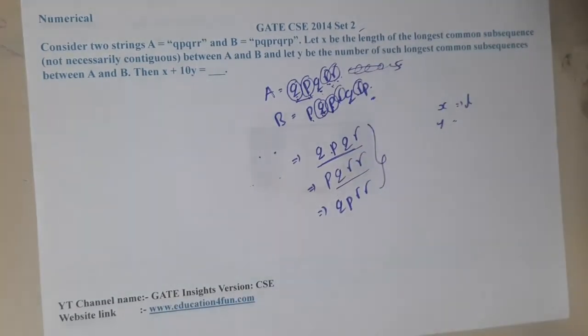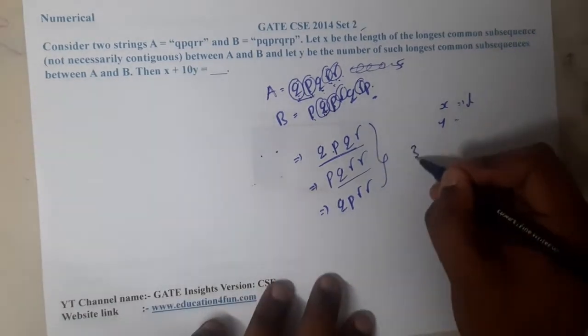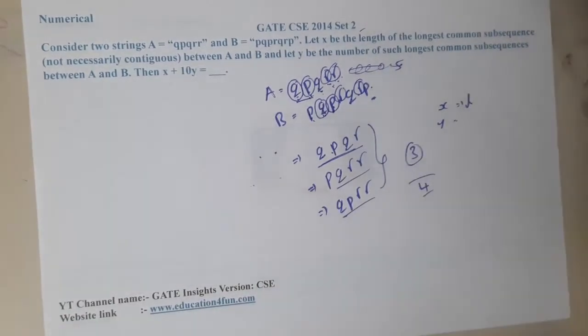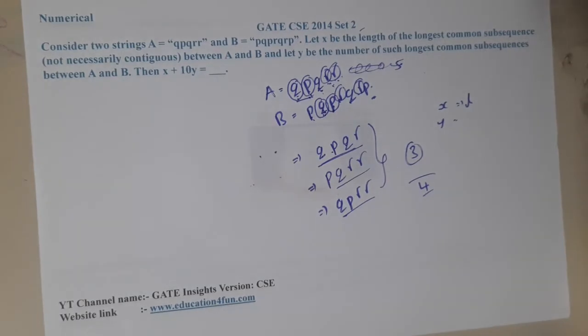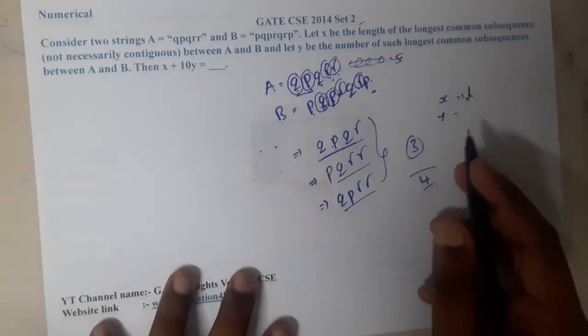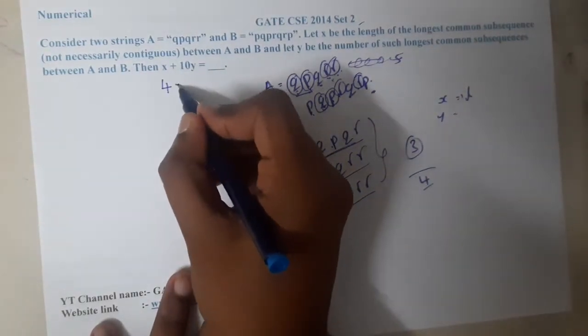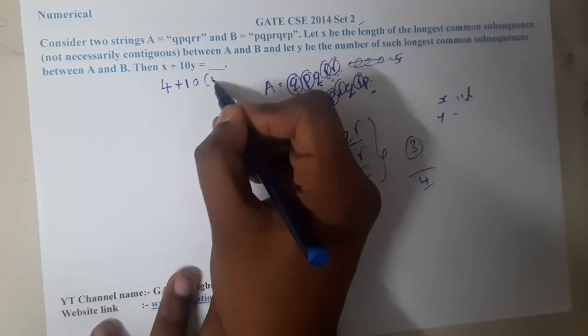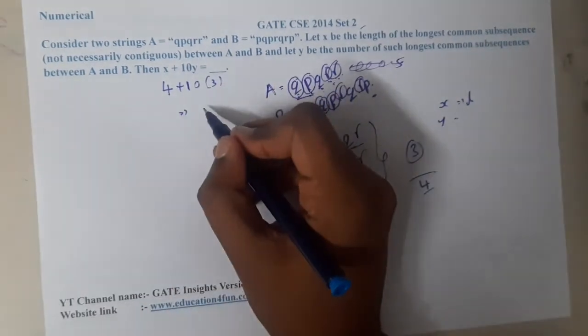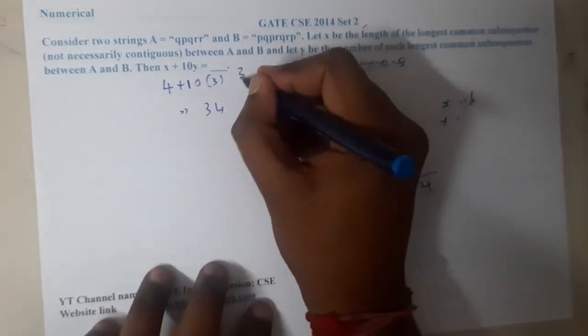Even after trying for some time I found only these three subsequences and the length is four. So the value of x is four and the value of y is three because we have three subsequences. The result is 34. The answer will be 34.